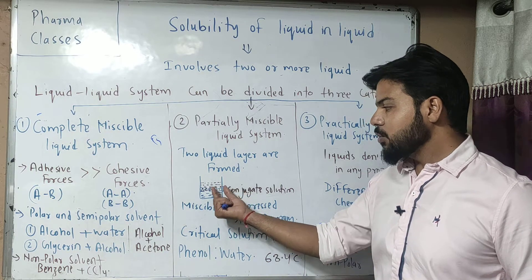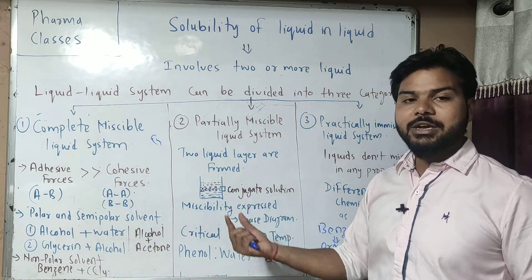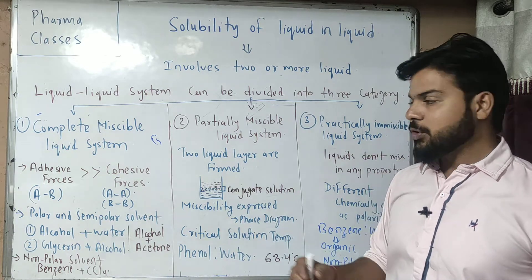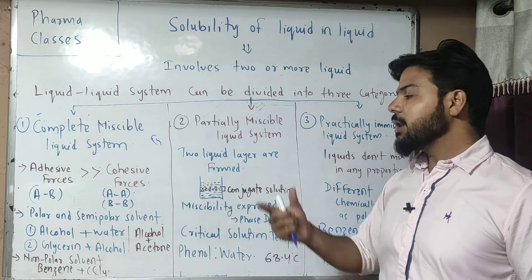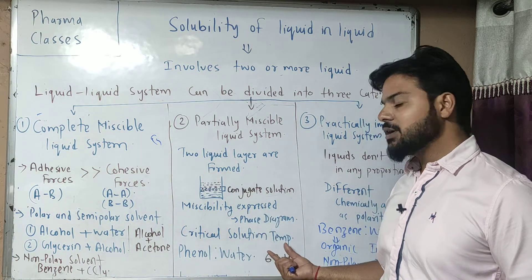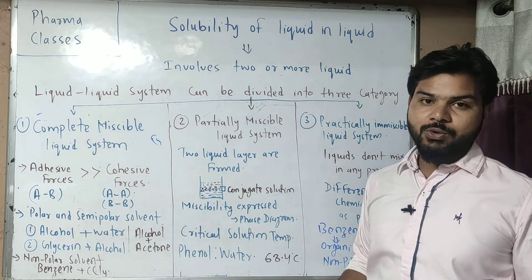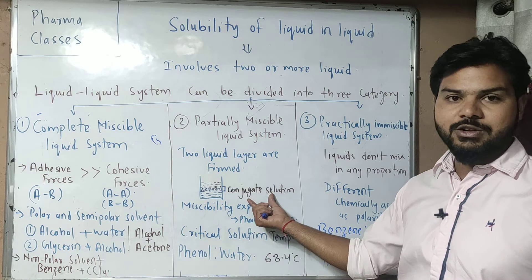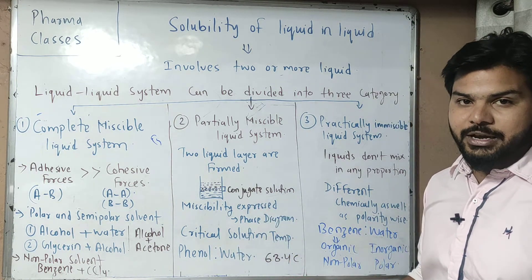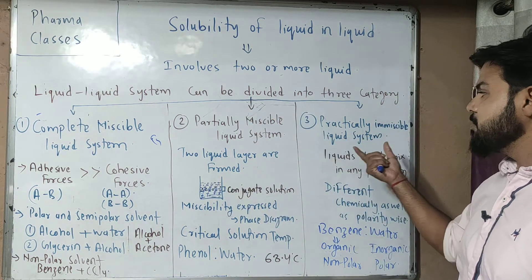Now, for conjugate solutions, when a partially miscible liquid system becomes completely miscible, there is one specific temperature called the critical solution temperature, or upper consolute temperature. For phenol and water at 25 degrees Celsius, we get a conjugate solution system, but the critical solution temperature is 68.4 degrees Celsius, above which they become completely mixed.